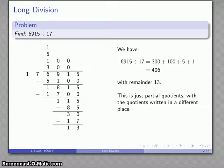So my quotient is 406 with remainder 13, and all that we've done here really is just partial quotients. And the only change that we've made is we've written down our quotients in a different place. Instead of keeping track of them on the side, we're keeping track of them up above.